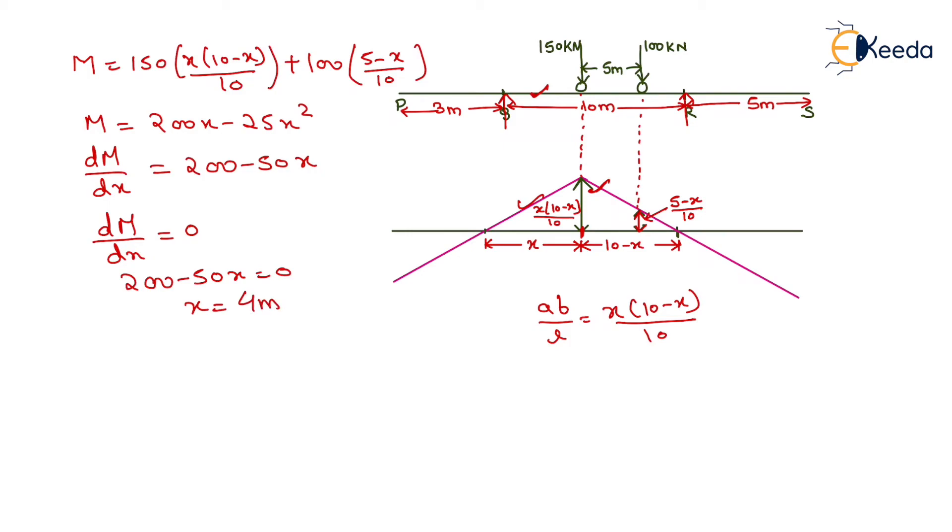From the Q support, this section will lie at a distance of 4 meters where the maximum sagging moment will occur.